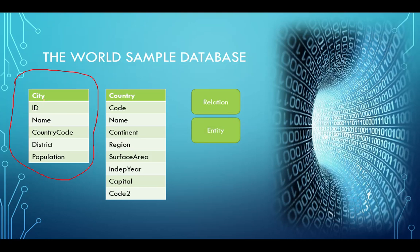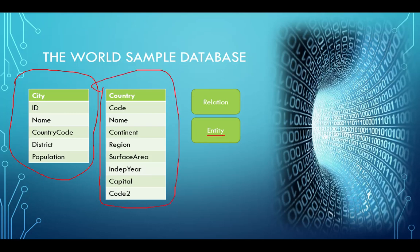Tables are what store our information — they're going to store information about entities. An entity is basically a noun: a person, place, thing, event — whatever it is, an entity is a thing that we are tracking information on. So in our city relation or city table, we're tracking information about specific cities. That is what this table is all about. This is a completely separate relation holding data about a whole other type of entity — it's holding information about countries.